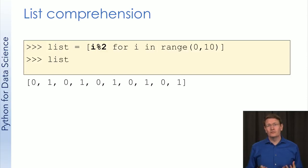If I want to have a list with 10 values in its alternate 0 and 1, I can just use the modulo operator. OK, one more.